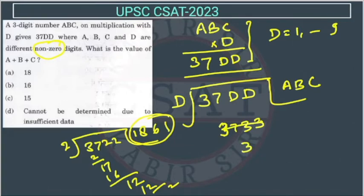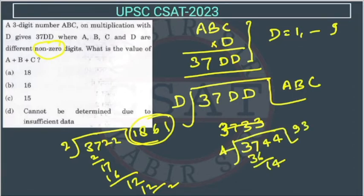Now, try with 4, so this will be 3744 and we are dividing with 4. So, this will go 9 times, so this is 36, then we will get 14, then it will go 3 times, this is 12. Then we will get 24, then again it will go, so this is ABC.